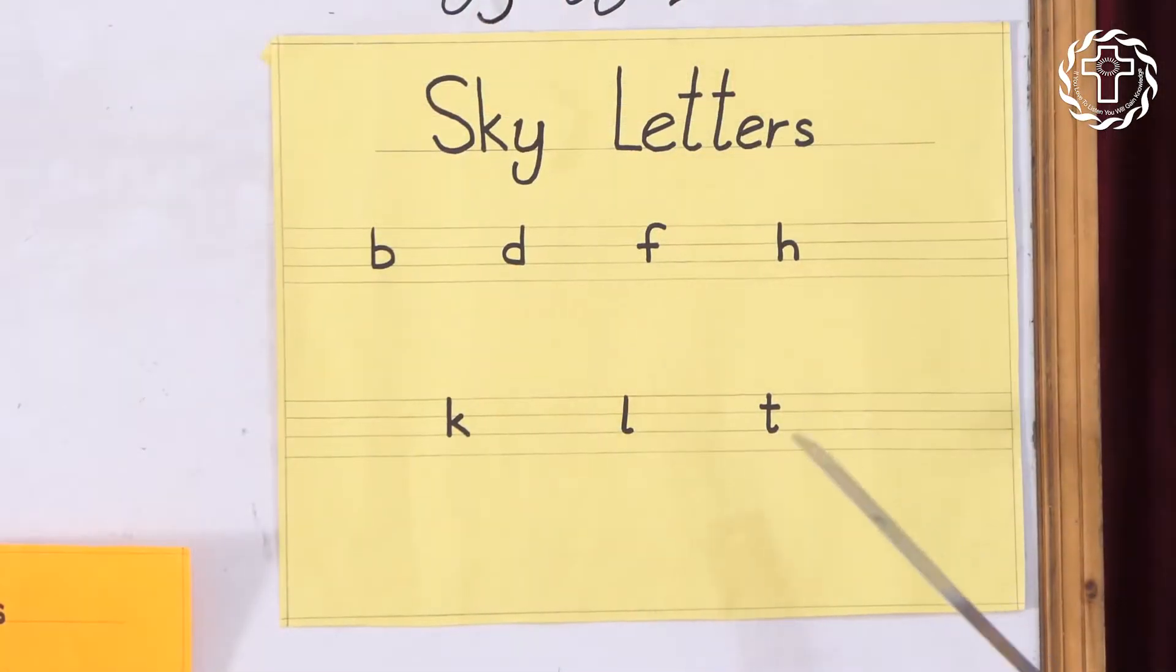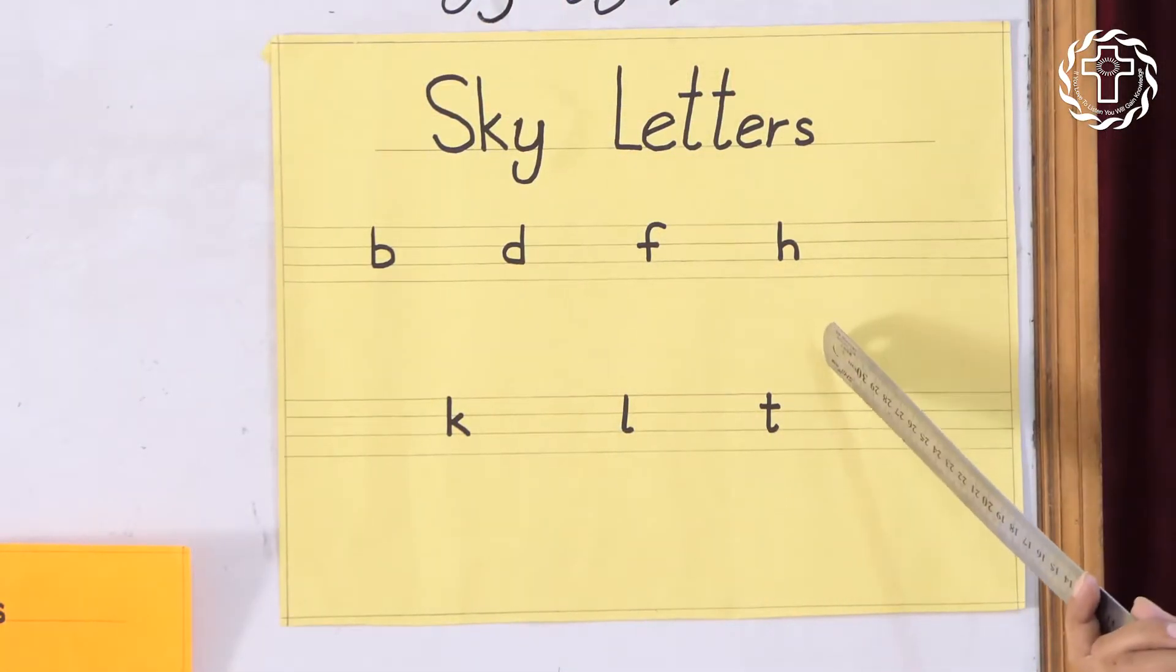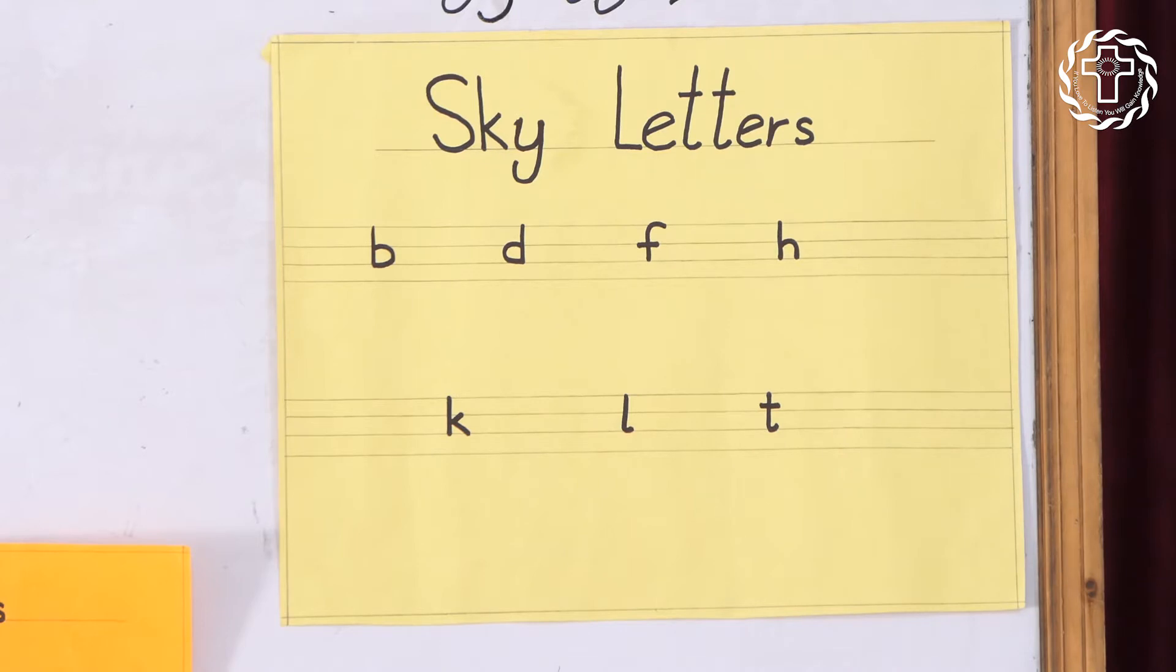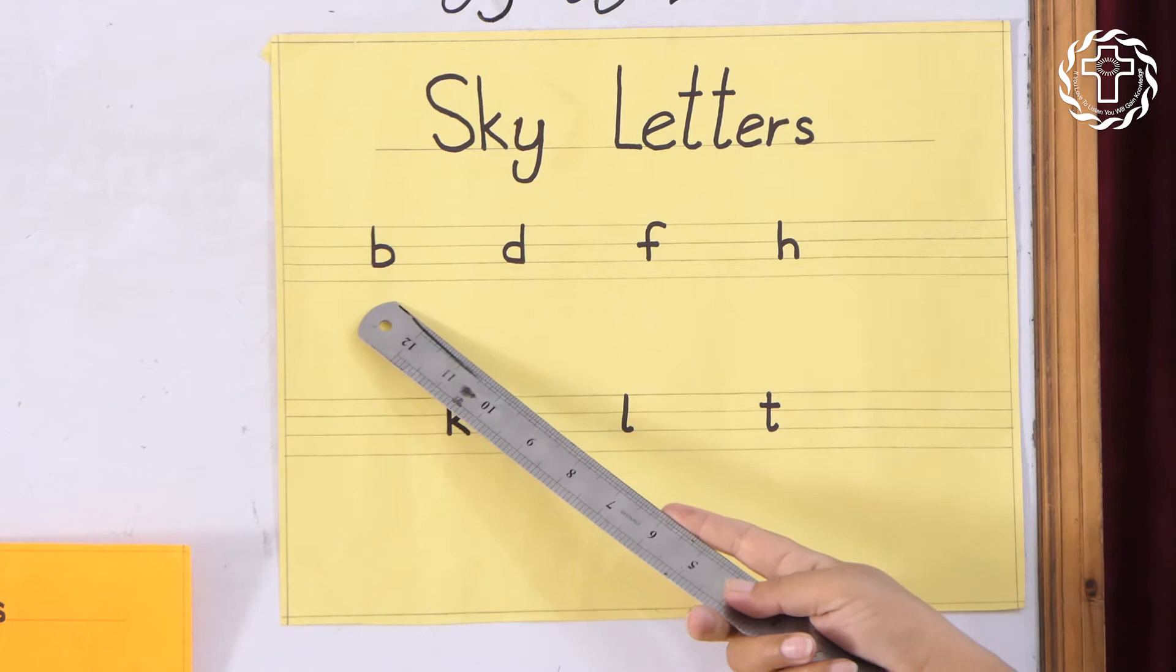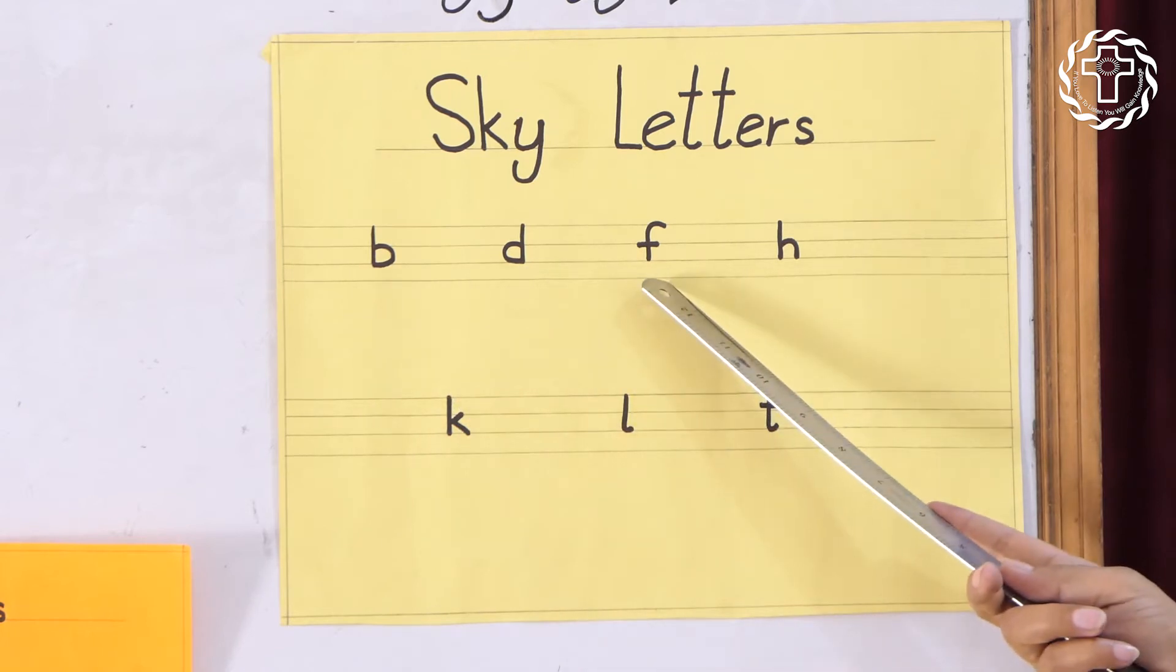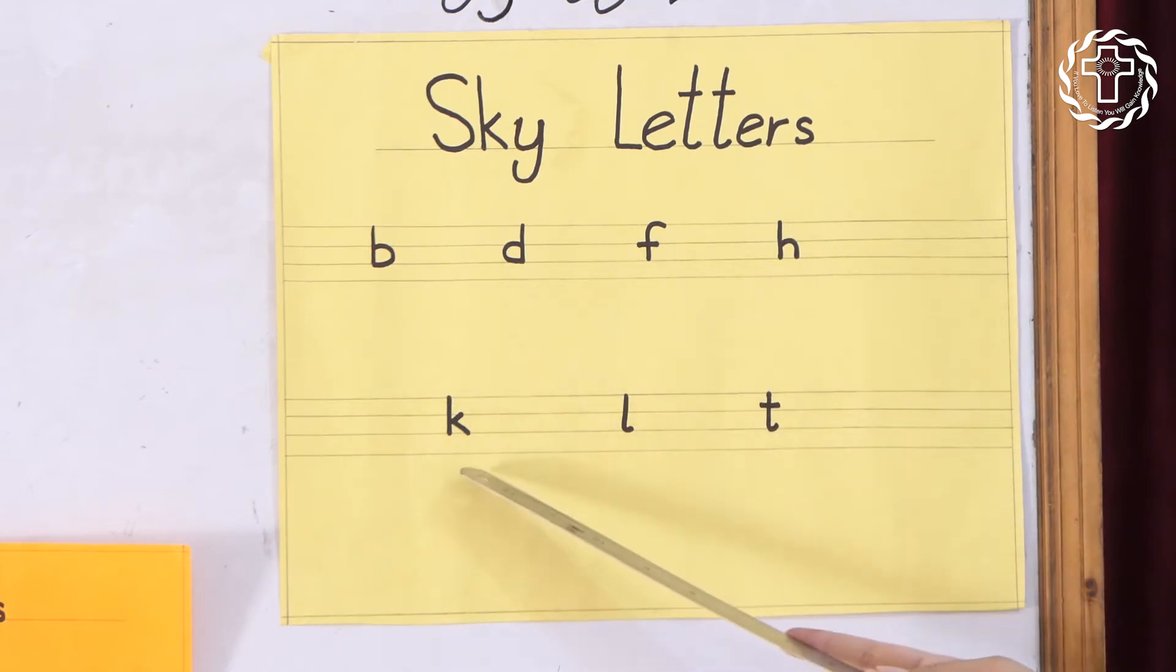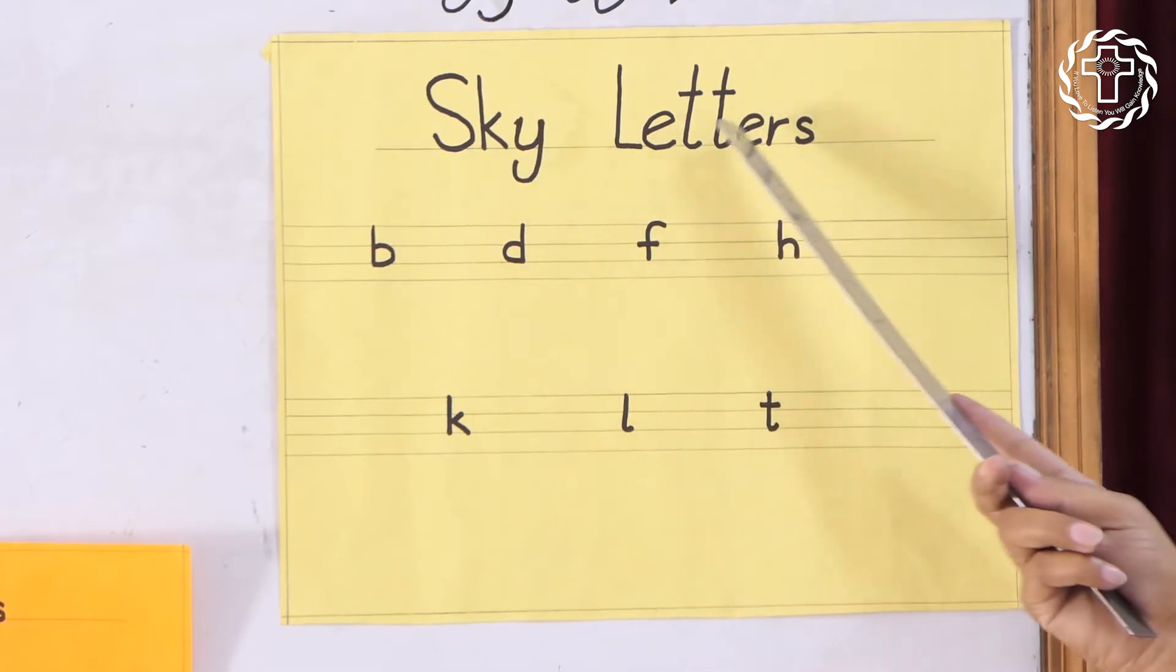You have already learned sky letter and grass letter. Let's revise. Sky letters: B, D, F, H, K, L, T. Sky letters.